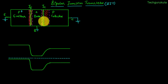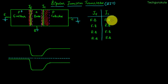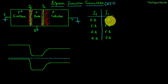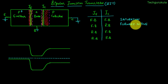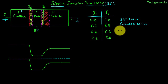For a PN junction we can either forward bias it or reverse bias it. As we have two junctions in a BJT we can have four combinations. FB represents forward bias and RB represents reverse bias. When both junctions are forward biased, we call this saturation mode. When the emitter junction is forward biased and the collector junction is reverse biased, we call this forward active mode. When the emitter junction is reverse biased and the collector junction is forward biased, we call this reverse active or inverse active. When both junctions are reverse biased, we call this cut-off.